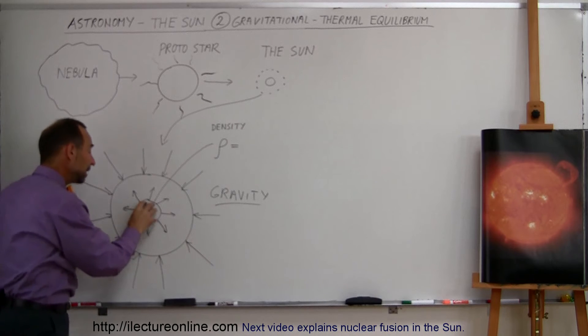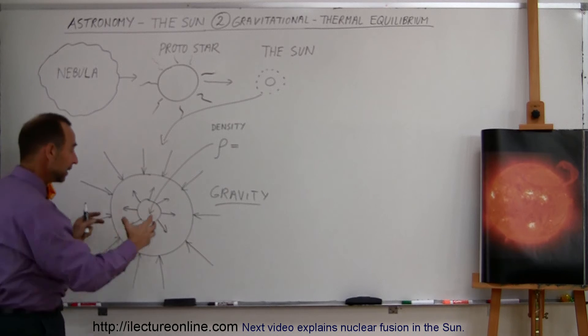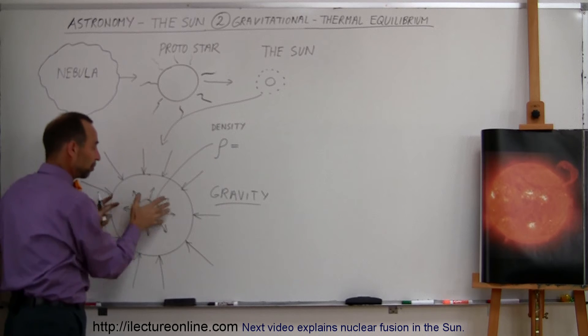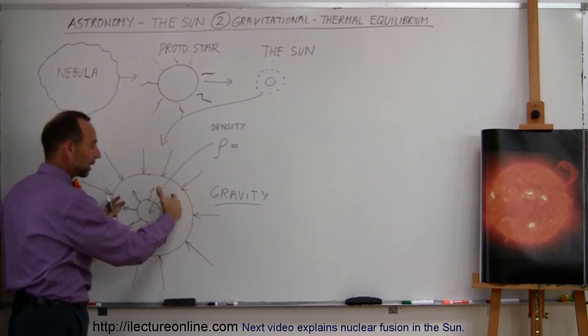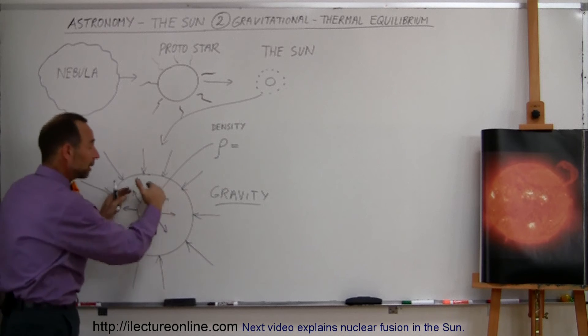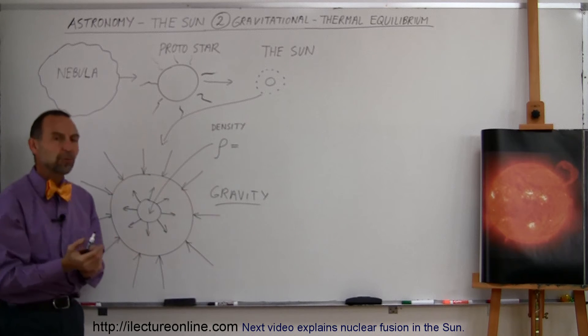If the activity in the center begins to decline, then less energy would be provided, less pressure pushing back would be provided, and gravity would begin to win over, and then the star would collapse into a smaller object until a new equilibrium point was found, and the star would be smaller.